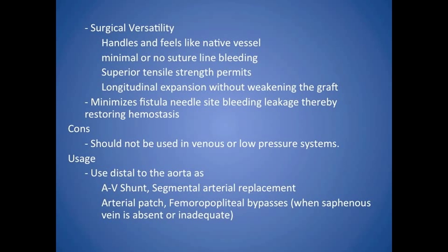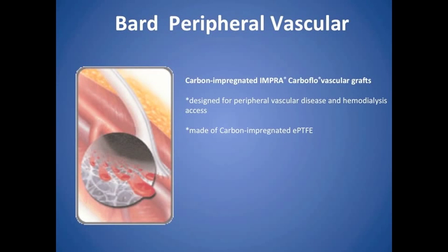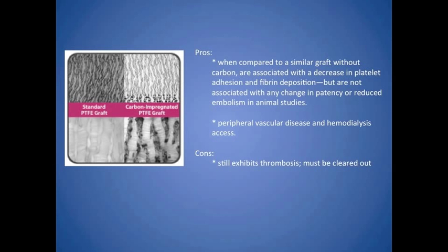This product is used distal to the aorta as an AV shunt, segmental arterial replacement, arterial patch, and bypass. Hi, my name is Edgar Pena, and I apologize for my tardiness, but you know what they say — good things come to those who wait. And let me tell you, we have a very good thing with our new product, the CarboFlow Impra Vascular Graft from BARD PV. So why is Impra CarboFlow the best choice for you? Because our graft doesn't get clogged as easily as the others. We address the issue of platelet adhesion by lining our ePTFE grafts with carbon. Research shows that carbon-lined vascular grafts are associated with only one-sixth of the platelet deposition compared to PTFE grafts without the carbon lining — meaning less maintenance and fewer medical bills for your customers.